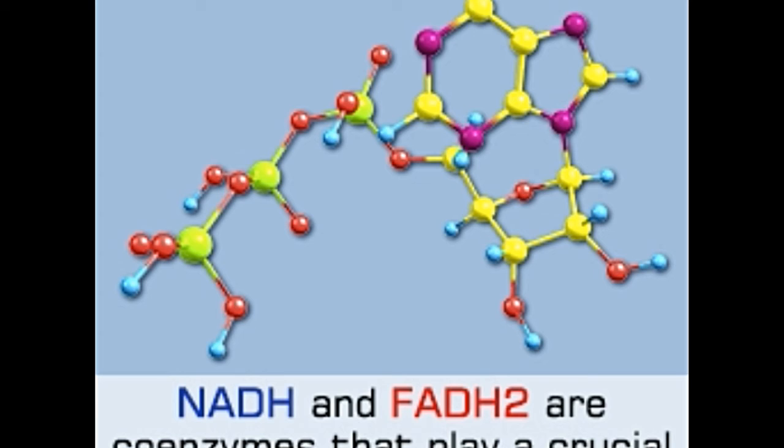It is observed that during cellular respiration, every NADH molecule produces three ATP molecules, whereas each FADH2 molecule generates two ATP molecules.